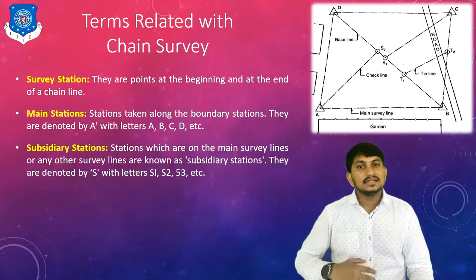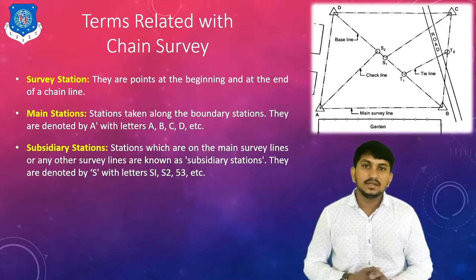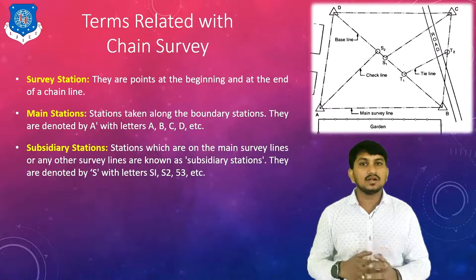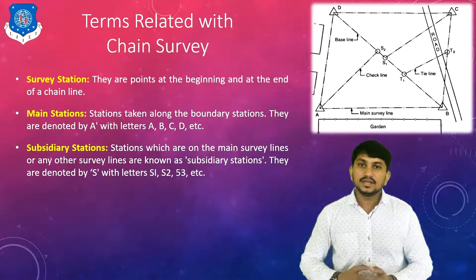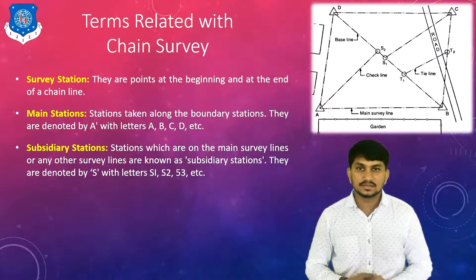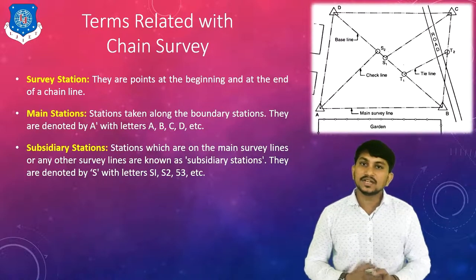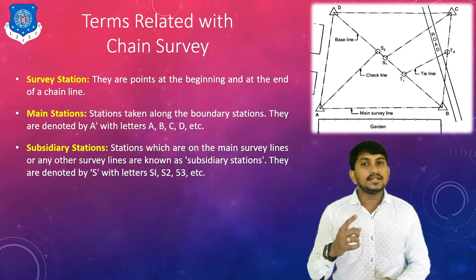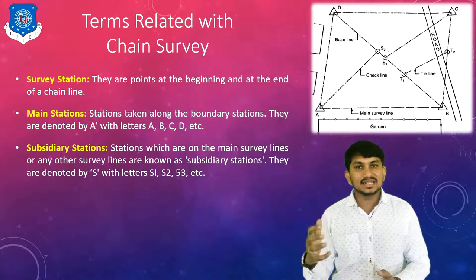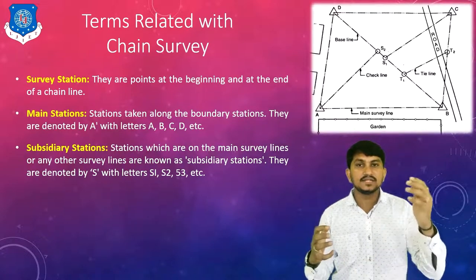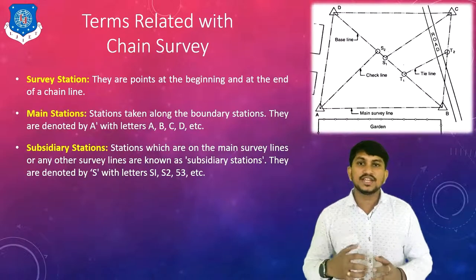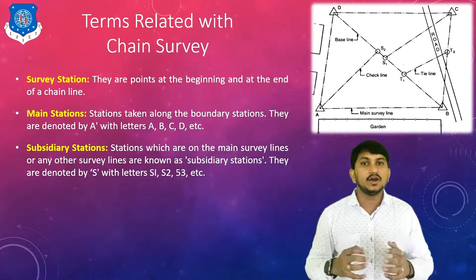Next are subsidiary stations. The stations which are on the main survey lines are called subsidiary stations. Here S1 and S2 are the subsidiary stations, denoted by the capital letter S. The line connecting a main survey station and a subsidiary station is called a check line. It is usually used for checking the accuracy of the work.